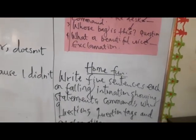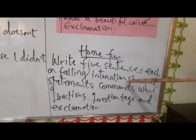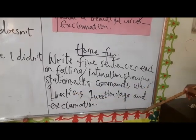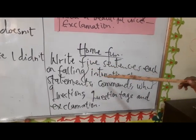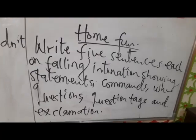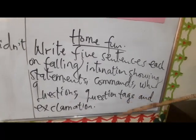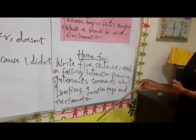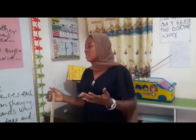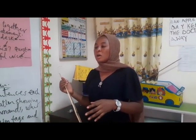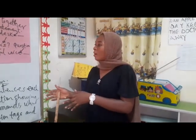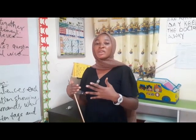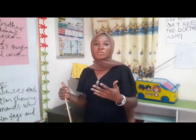This is your homework or assignment. Write five sentences each on falling intonation, showing: statements, commands, wh-questions, question tags, and exclamations — five sentences for each category. Is that clear? Please write them and send me your feedback. My WhatsApp number is 0807-893-3621. I would love to get feedback from you. Thank you.